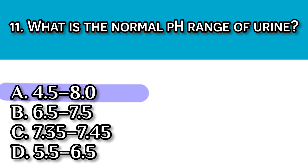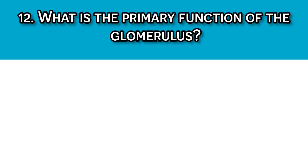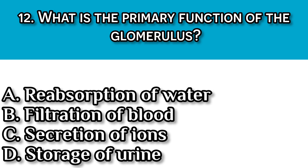Question number twelve: What is the primary function of the glomerulus? A. Reabsorption of water, B. Filtration of blood, C. Secretion of ions, and D. Storage of urine. Our answer here should be B, filtration of blood, because the glomerulus filters blood plasma to initiate urine formation.